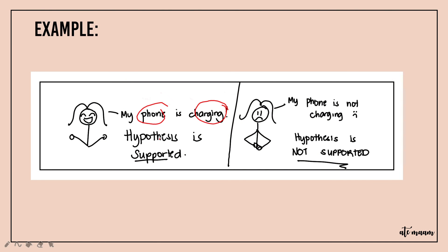If your phone is charging, that means your hypothesis is supported — it is correct. However, if your phone is not charging, that means your hypothesis is not supported. If the hypothesis is supported, our prediction that plugging the phone into another outlet will start charging is correct. If the phone is not charging, then the hypothesis is not correct. It will either be supported or not supported — it depends on your experimentation and your data analysis.